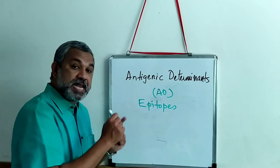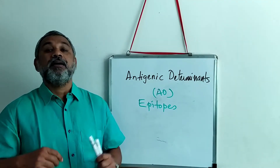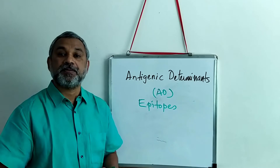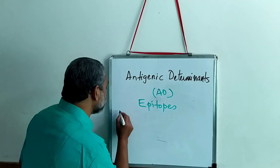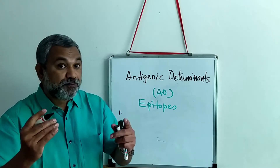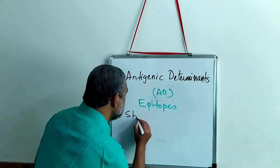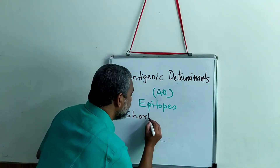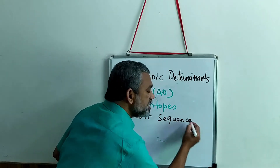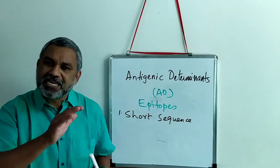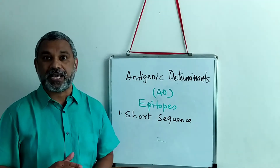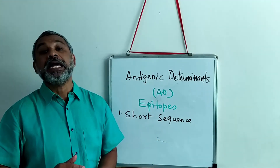When we look at antigenic determinants, there are many characteristics. One characteristic of antigenic determinants is that it is a short sequence — only about 6 to 15 amino acids in length. That short set of sequences becomes an antigenic determinant.